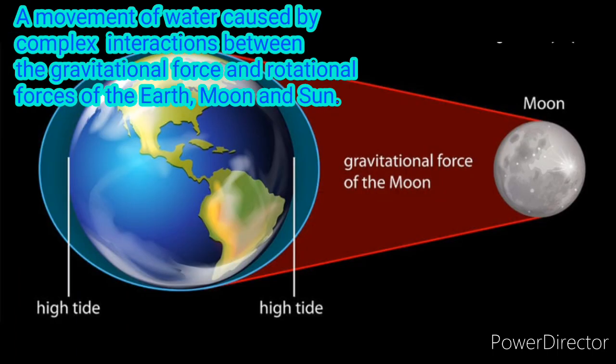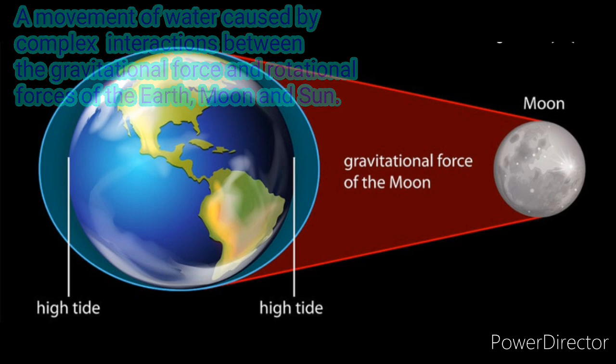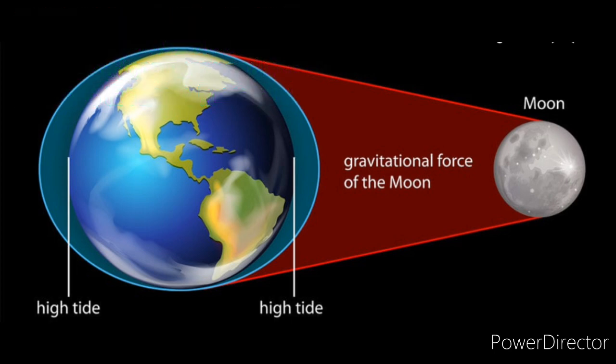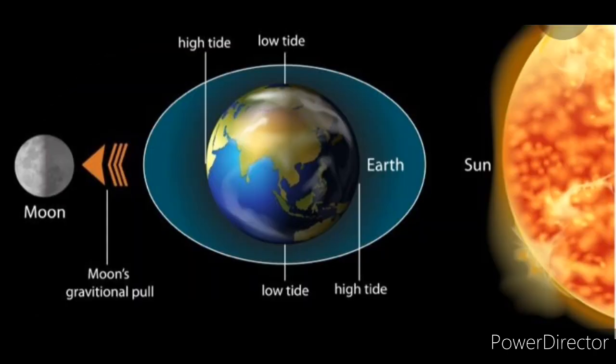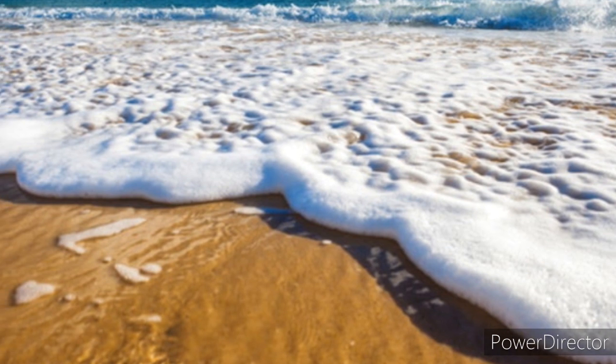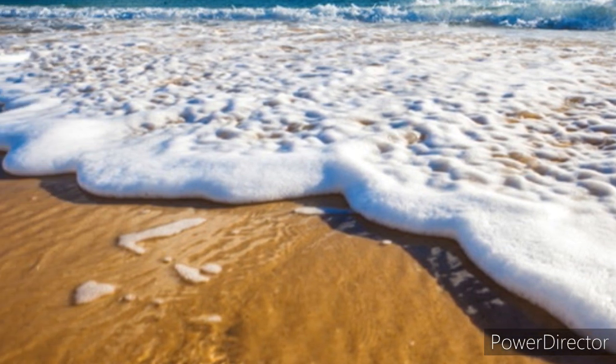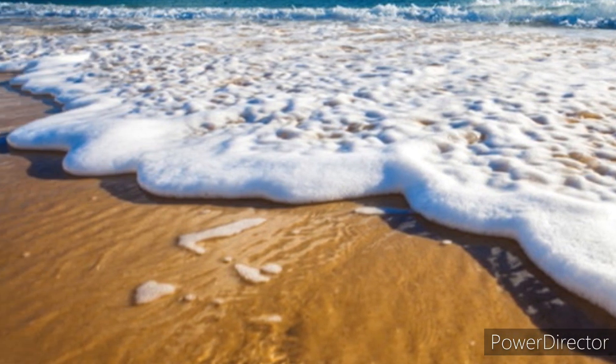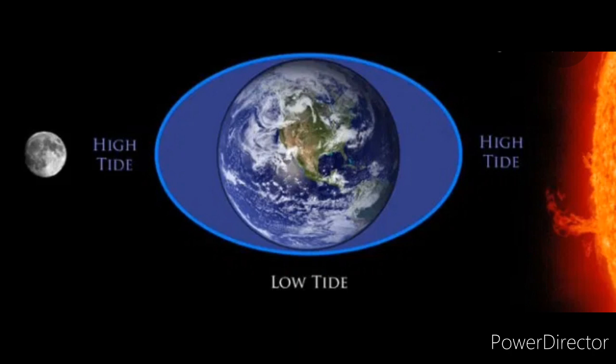A tide is a movement of water caused by complex interactions between the gravitational force and rotational force of the Earth, moon, and sun. The combined forces cause the oceans to bulge out in the direction of the moon, or simply, tides are caused by the pull of the moon's gravity, as seen in the picture.